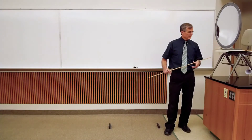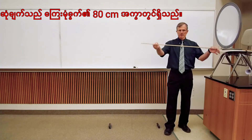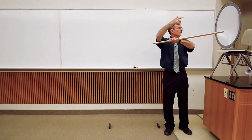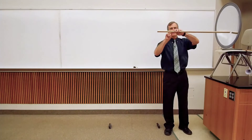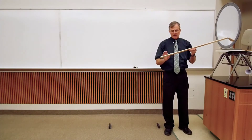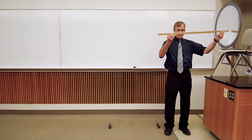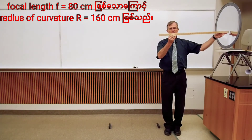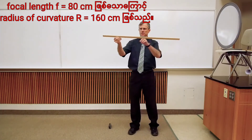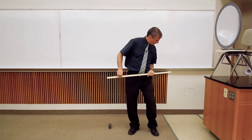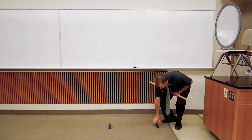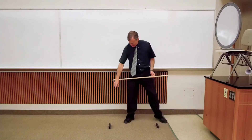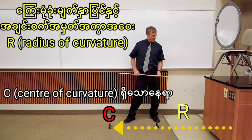This particular mirror has a focal length of 80 centimeters — between my two fingers here. Parallel rays from infinity would come in and focus at this point, about 80 centimeters away from the mirror. The focal point is half of the radius of curvature, so the radius of curvature must therefore be 160 centimeters, about out to here. I've placed two erasers at the approximate focal length and radius of curvature, which is twice the focal length, for reference.